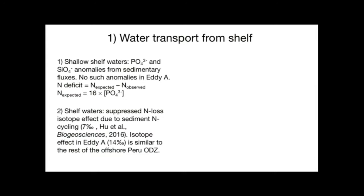Another piece of evidence comes from the isotope effect. We calculated an isotope effect of about 14 per mil in the eddy, similar to other reported values for nitrate reduction off Peru of 16 per mil. But for coastal stations, we calculated an isotope effect of only 7 per mil — clearly lower than in the offshore eddy. A low isotope effect is expected in the water column of coastal waters because it is influenced by the suppressed isotope effect of sedimentary denitrification.